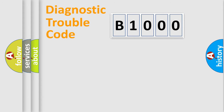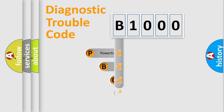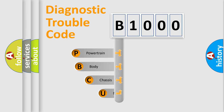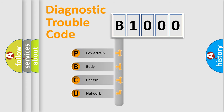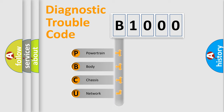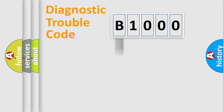First, let's look at the history of diagnostic fault code composition according to the OBD2 protocol, which is unified for all automakers since 2000. We divide the electric system of the automobile into four basic units: Powertrain, Body, Chassis, and Network.